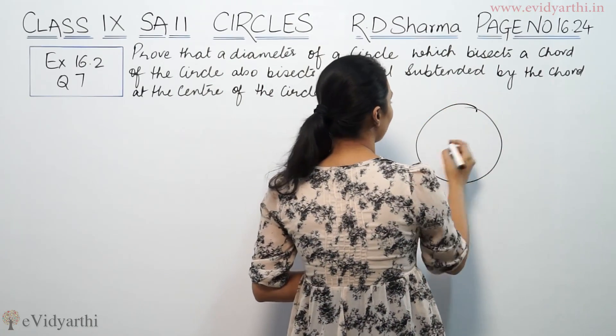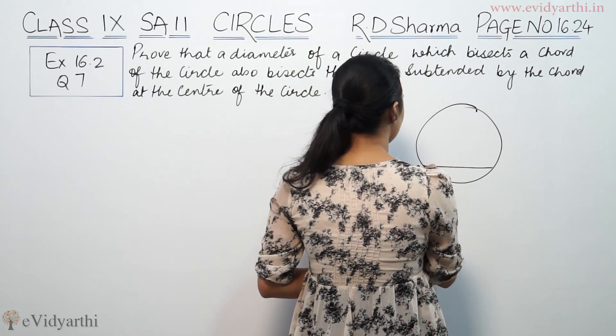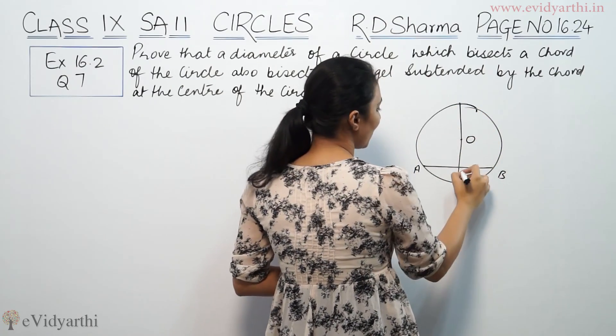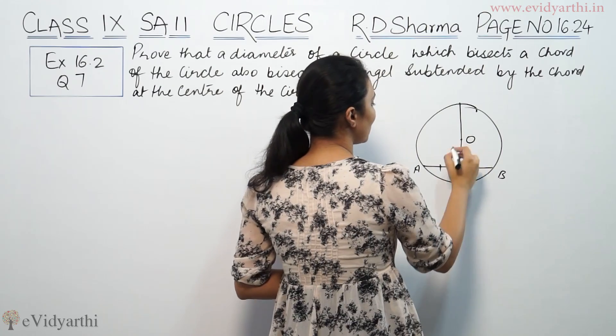So if we have a circle here, this is the chord, suppose this is AB. If this is a diameter, suppose this is the center of the circle O. This bisects the chord, so this is equal to this.